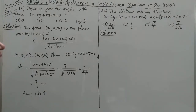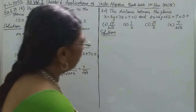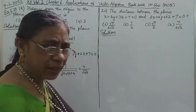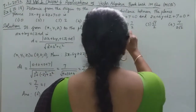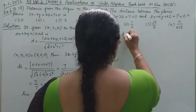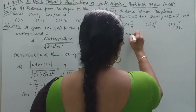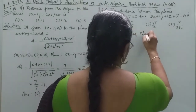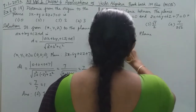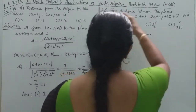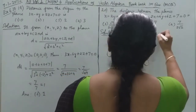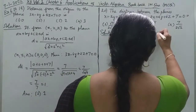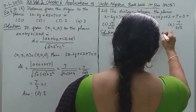The distance between the planes is 2 planes. What about the direction ratios of plane 1? The direction ratios of plane 1 are 1, 2, 3.